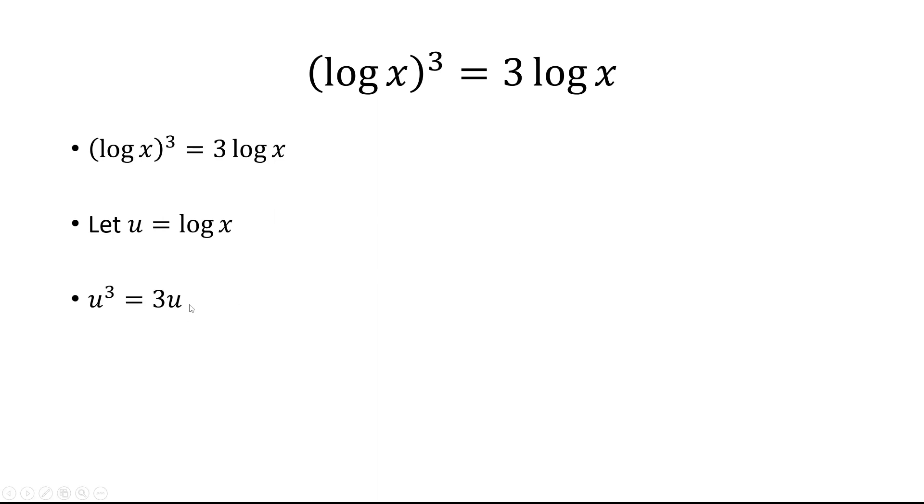Now I can subtract both sides by 3u. We have u cubed minus 3u is 0. Factoring out a u, we have u times u squared minus 3.